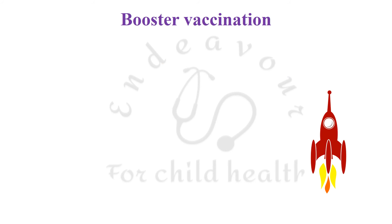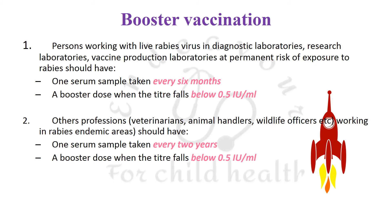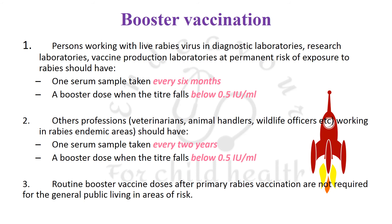For booster vaccination: persons working with live rabies virus in diagnostic, research, or vaccine production laboratories are at permanent risk and should have one serum sample taken every six months to check antibody titers. A booster dose is required when the titer falls below 0.5 international units per ml. Other professions such as veterinarians, animal handlers, and wildlife officers working in rabies-endemic areas should have one serum sample taken every two years, with a booster dose again required if titers fall below 0.5 IU/ml. Routine booster doses after primary rabies vaccination are not required for the general public living in areas of risk.